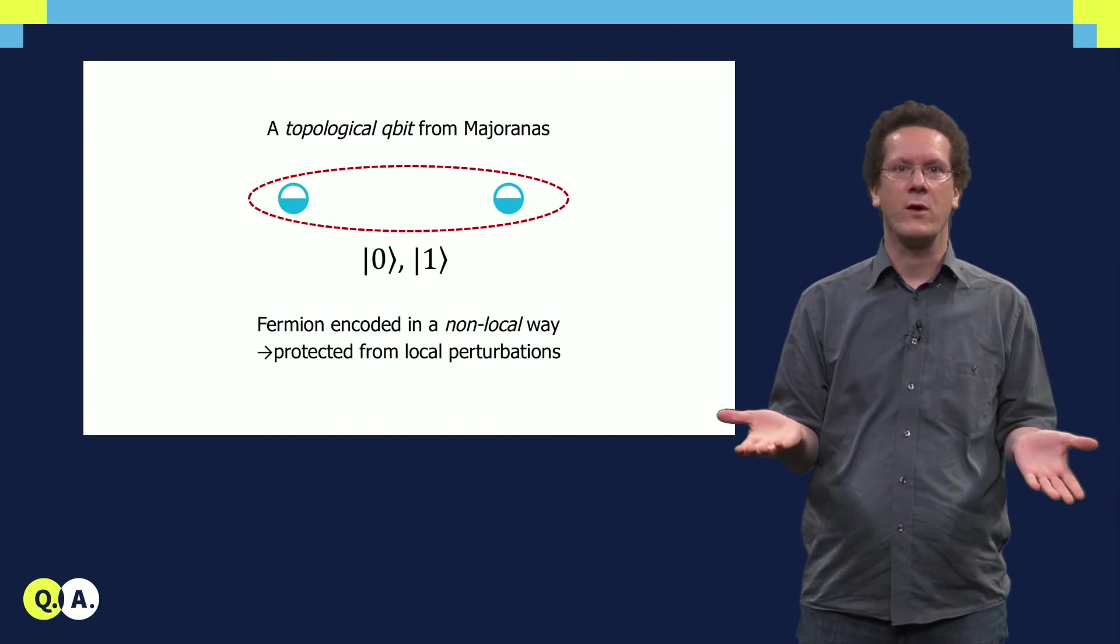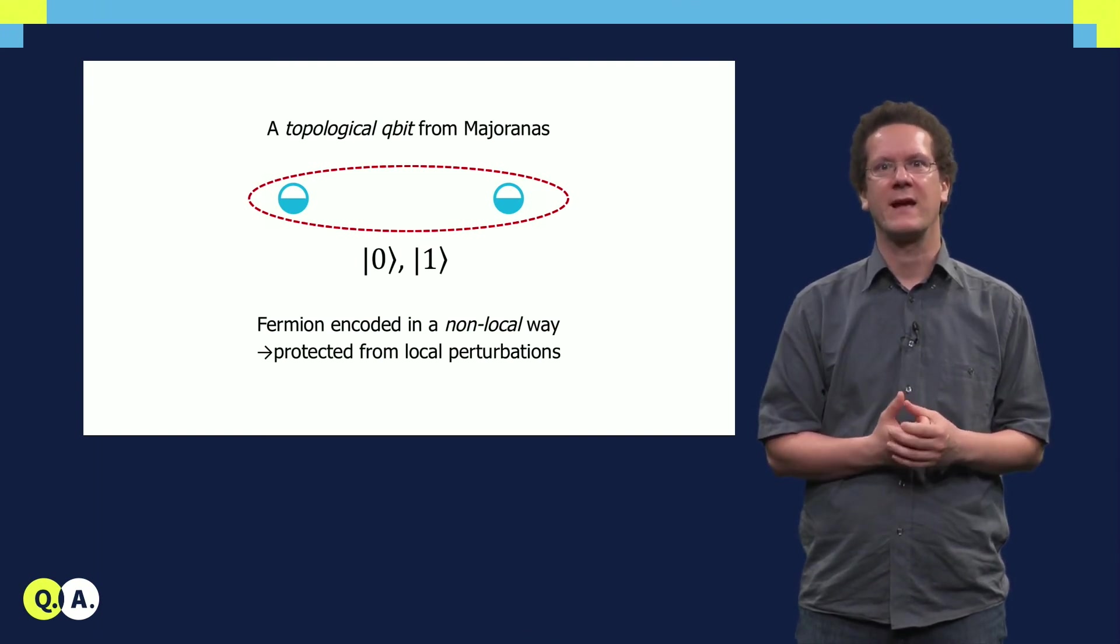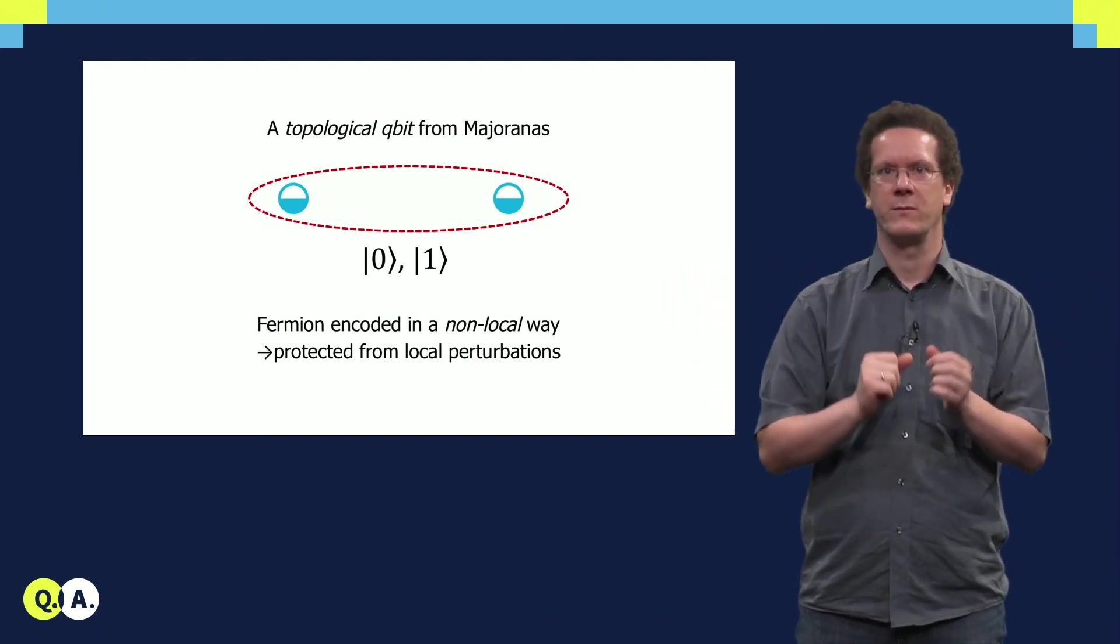But now Majoranas come to the rescue. As I just told you, two Majoranas correspond to one fermion. But if I have two spatially separated Majoranas, I can encode one fermionic degree of freedom in a very non-local way, protected from any local perturbation.